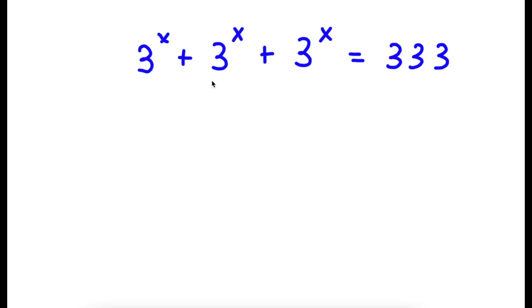So in this problem, I have 3 to the power of x plus 3 to the power of x plus 3 to the power of x is equal to 333.